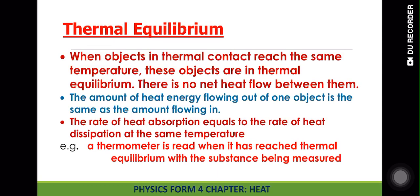Thermal equilibrium is very simple. When two objects with different temperatures are in thermal contact, one object will be at very high temperature and another at low temperature. The heat energy will flow from the high temperature object to the low temperature object, and this process will continue until both objects reach the same temperature.